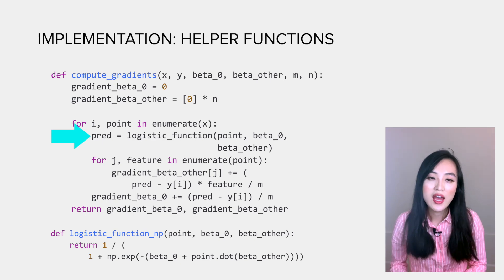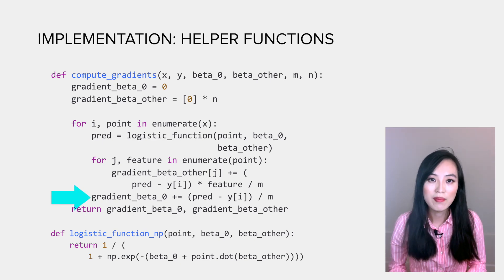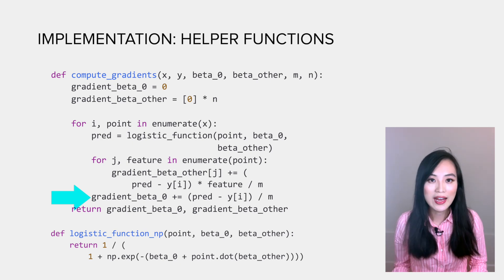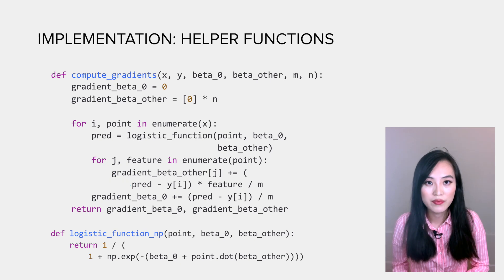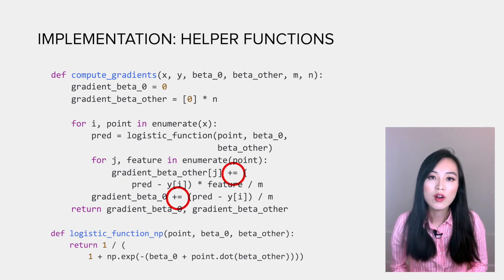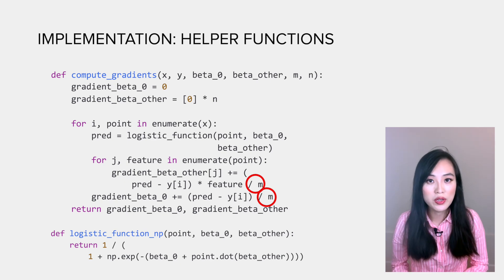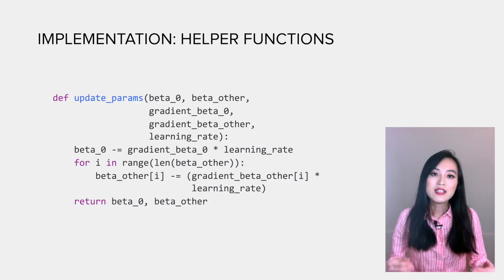Inside the for loop, we first get the prediction using the logistic function. Then we obtain the gradient at beta 0, which is simply the prediction minus yi. The gradients at other betas are represented as the prediction minus yi times the jth feature of the ith data point. We accumulate the gradient from all the data points and normalize them by the number of data points m.